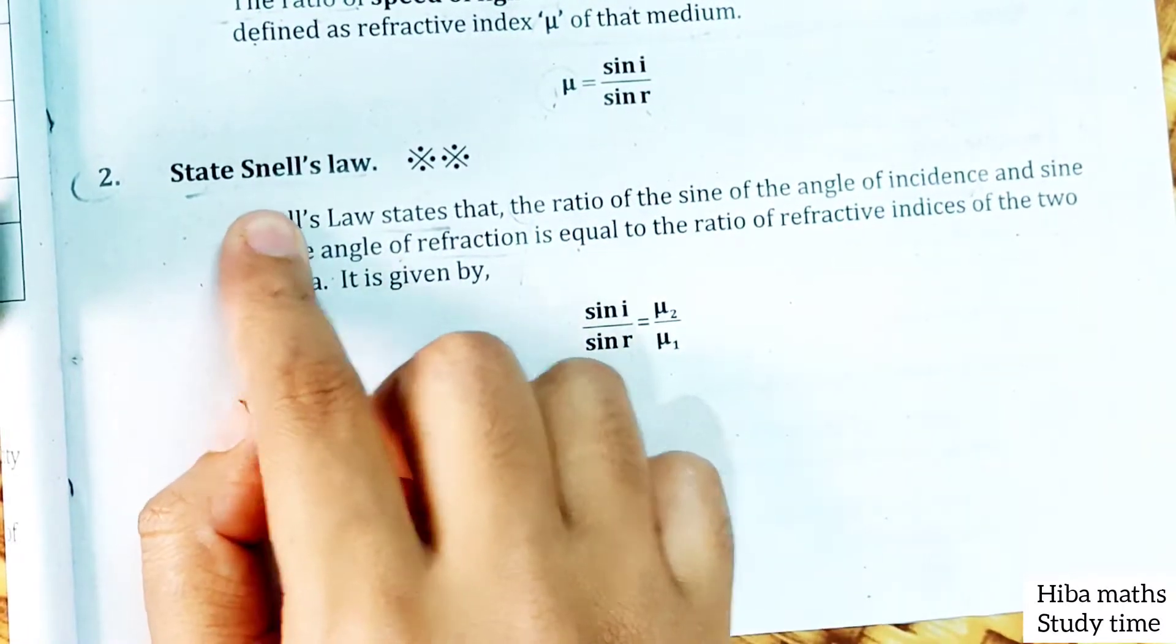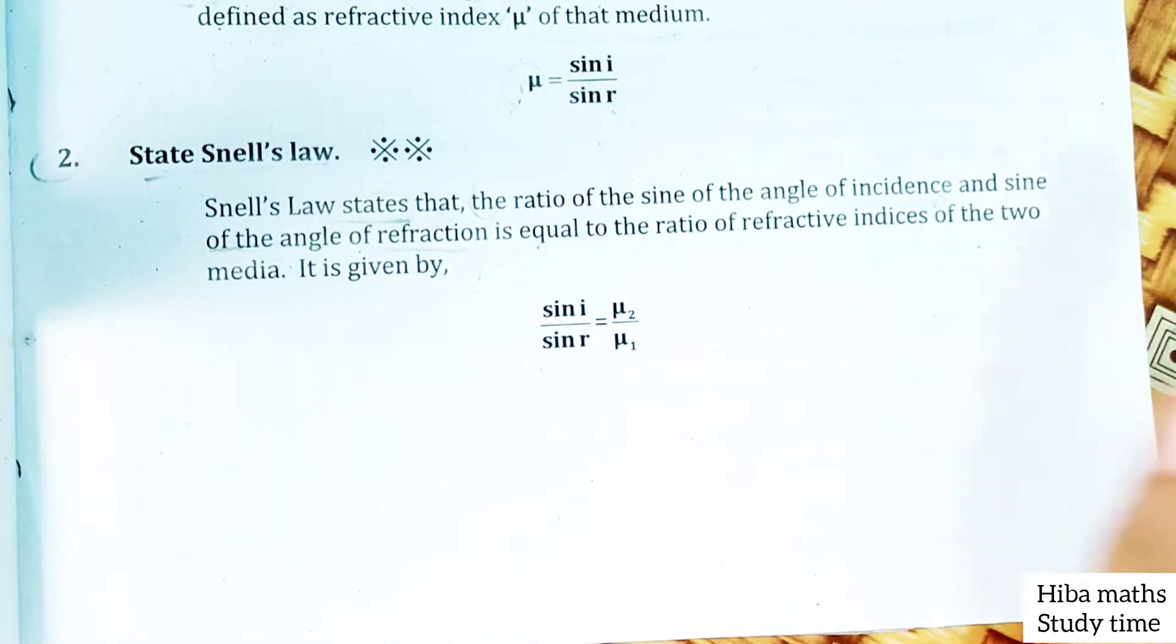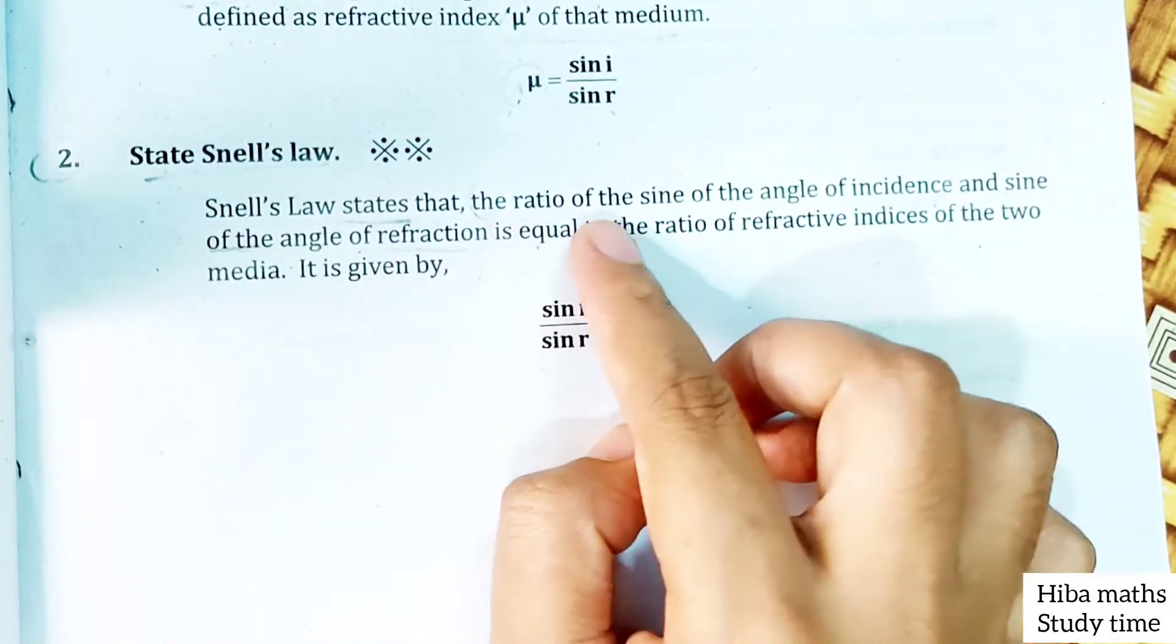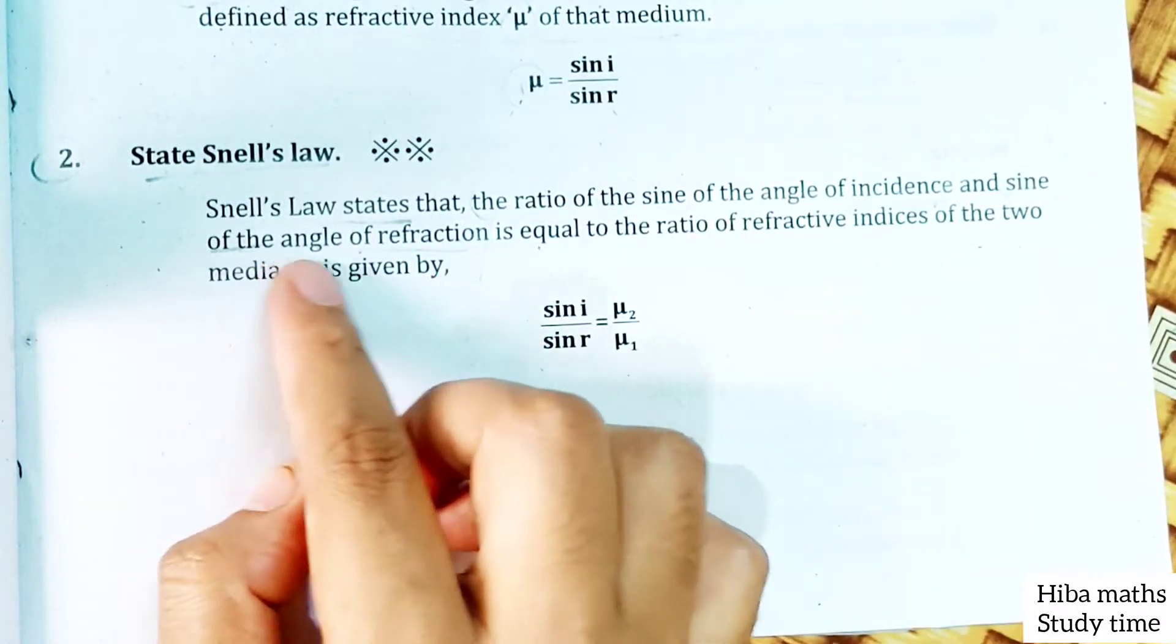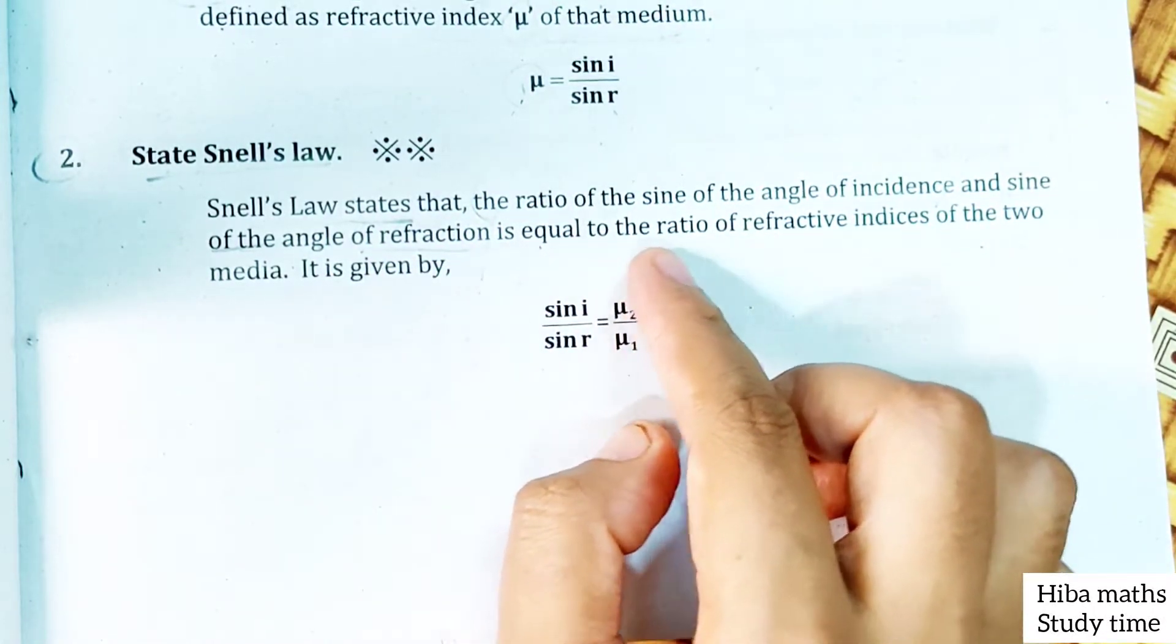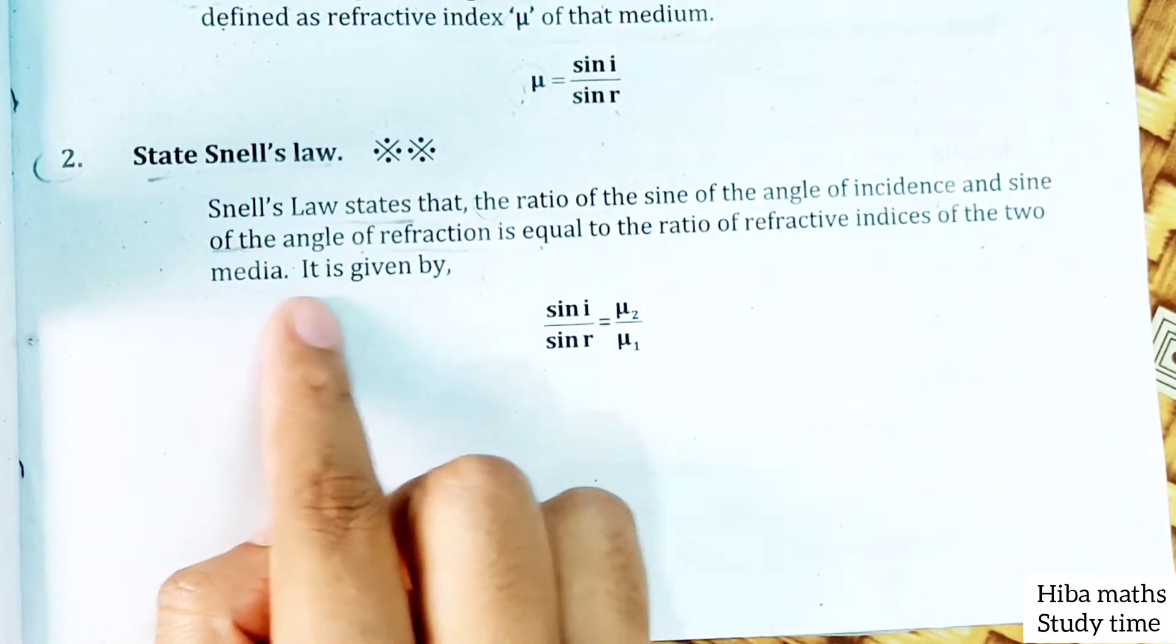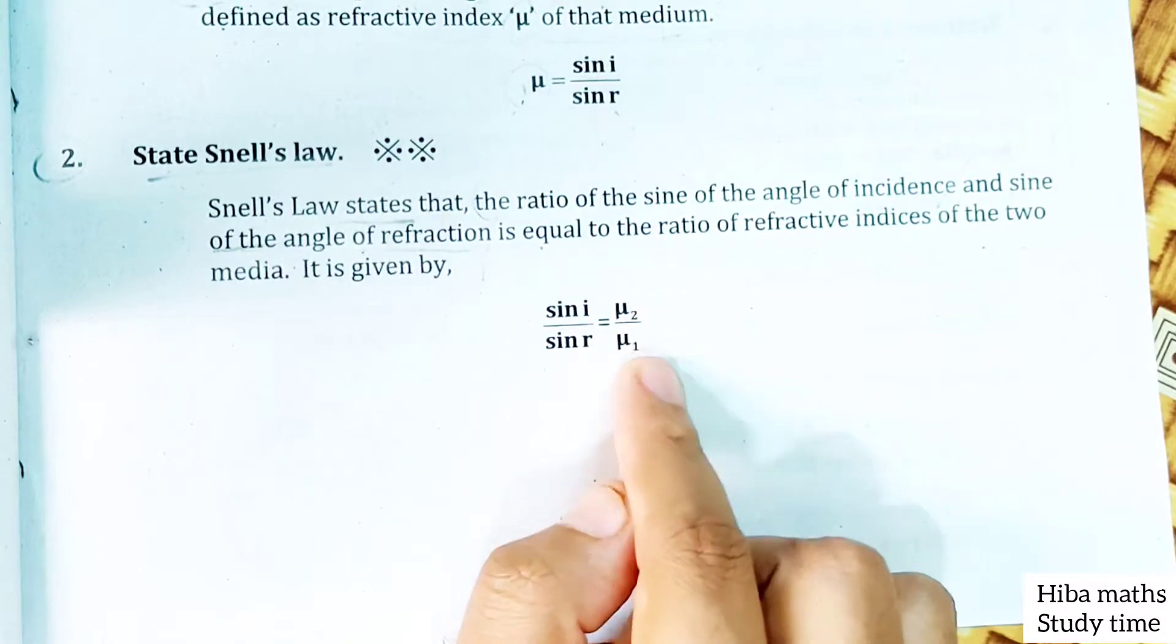State Snell's law. Snell's law states that the ratio of the sine of the angle of incidence and sine of the angle of refraction is equal to the ratio of refractive indices of the two media. It is given by sin i by sin r equals μ₂ by μ₁.